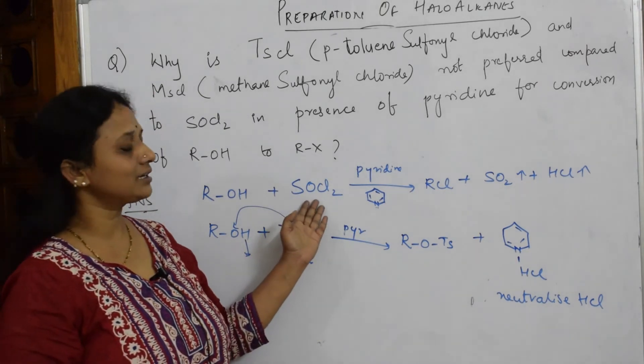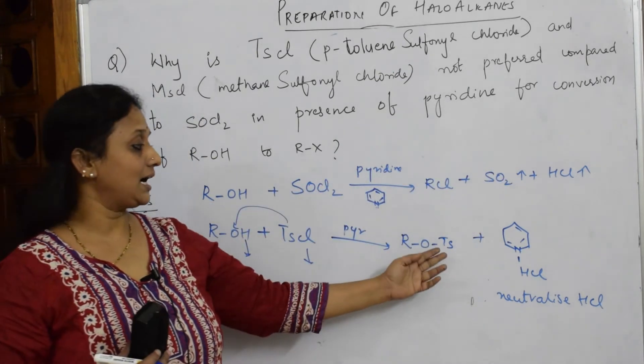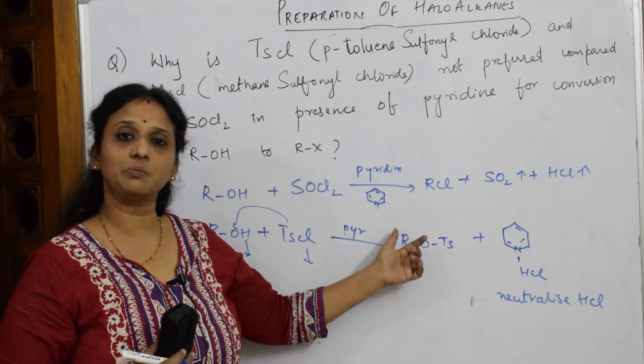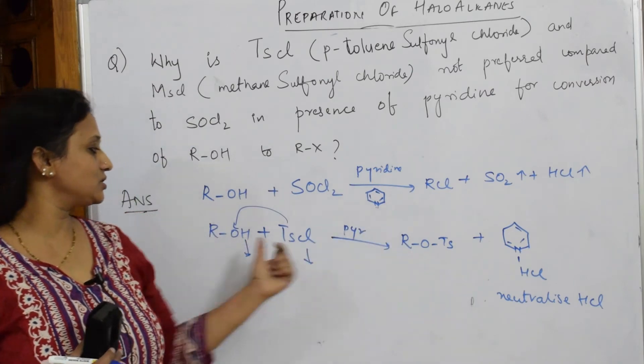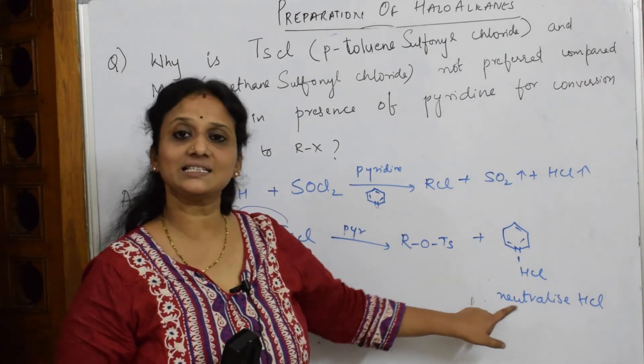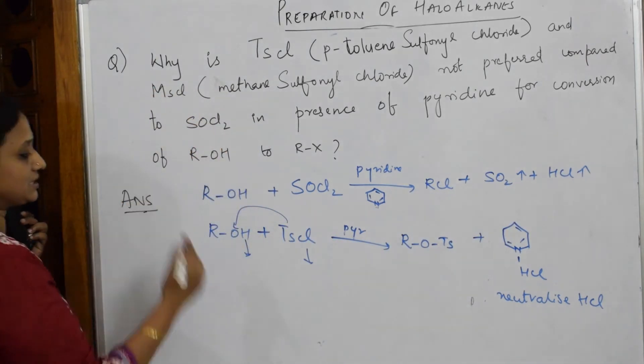So here with thionyl chloride, comfortably I'm getting RCl and gaseous products. But with TSCl, I'm not getting it because toluene sulfonyl chloride is blocking the alkyl group and not allowing the release of OH-, and your pyridine is neutralizing HCl and not allowing it to escape.